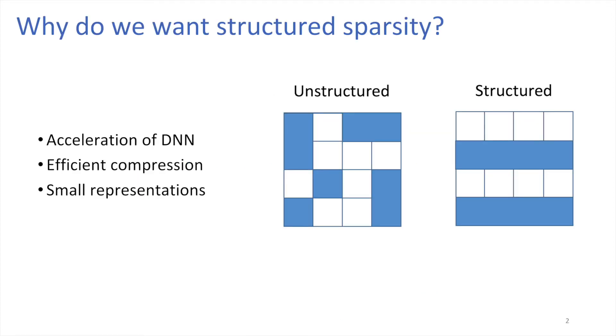In our paper, we obtain structured sparsity of deep neural networks. First of all, structured sparsity provides us with a tool for acceleration of deep neural networks. Also, it can be used for efficient compression and for obtaining small representations for later usage in image retrieval.